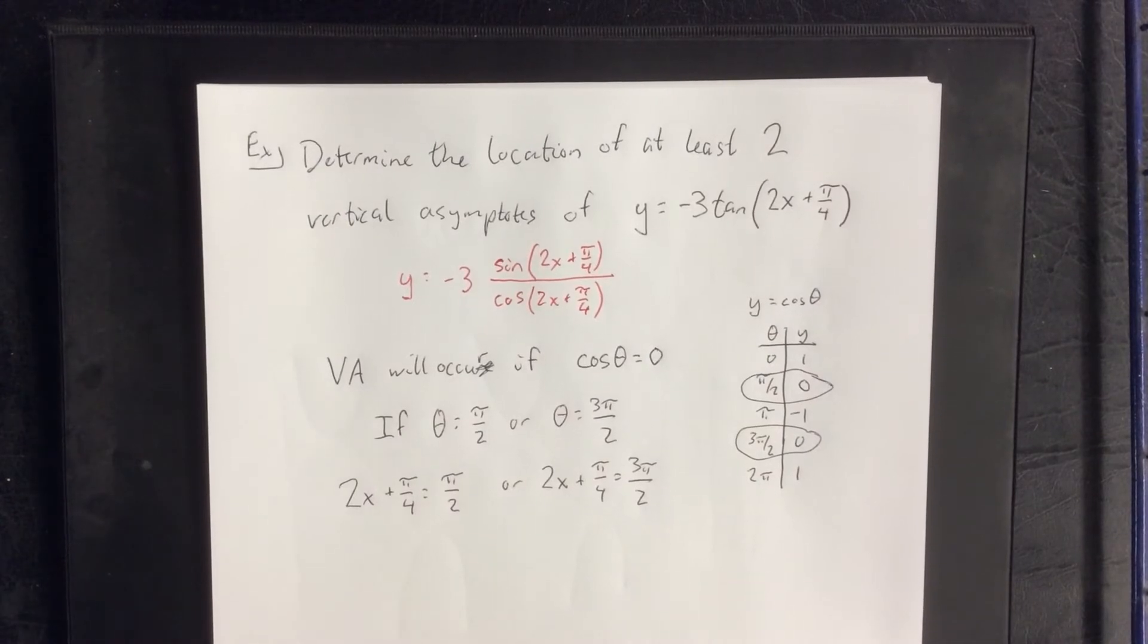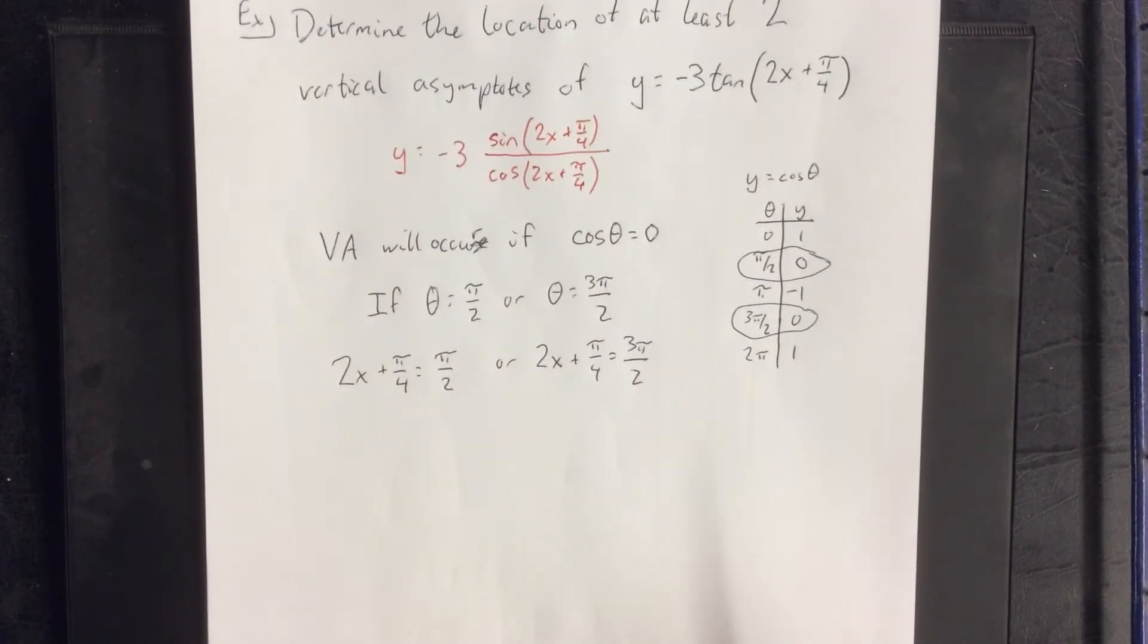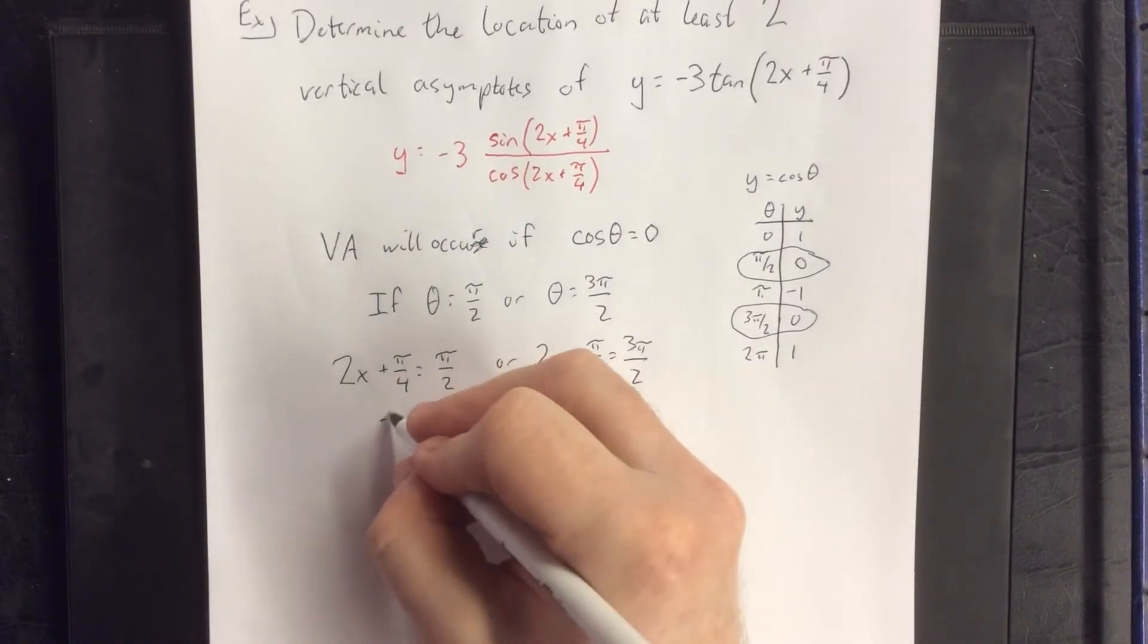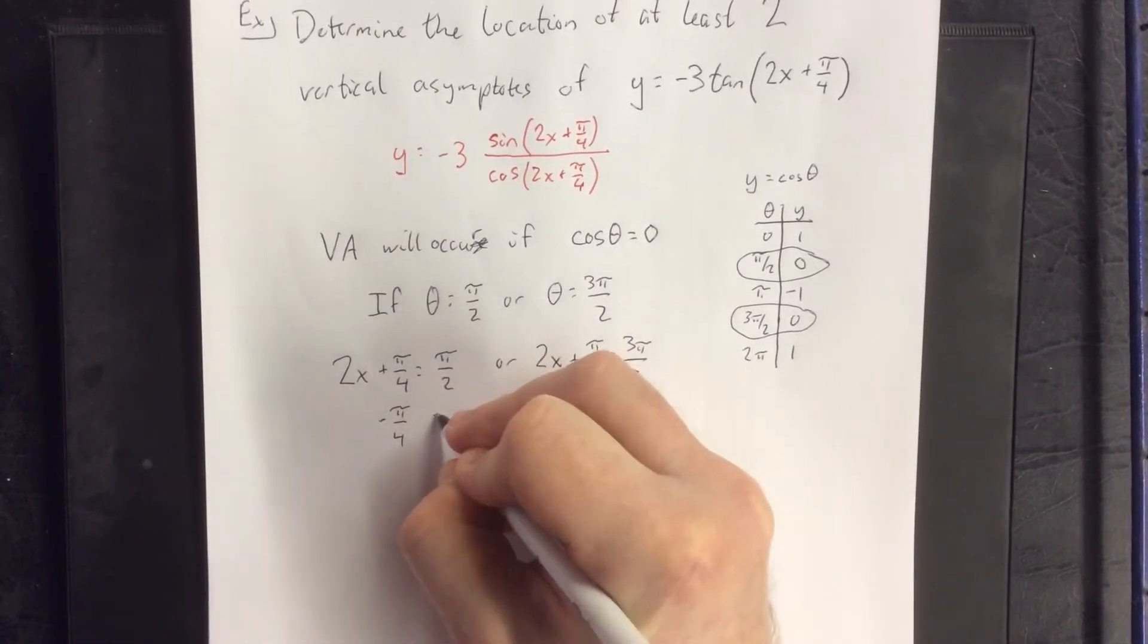In either of these cases, you're going to wind up with a vertical asymptote. In order to solve these two equations, we'll start by subtracting pi over 4 from both sides.